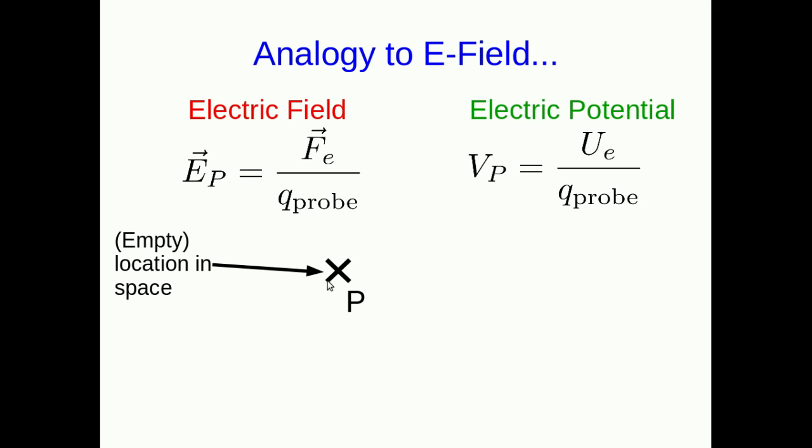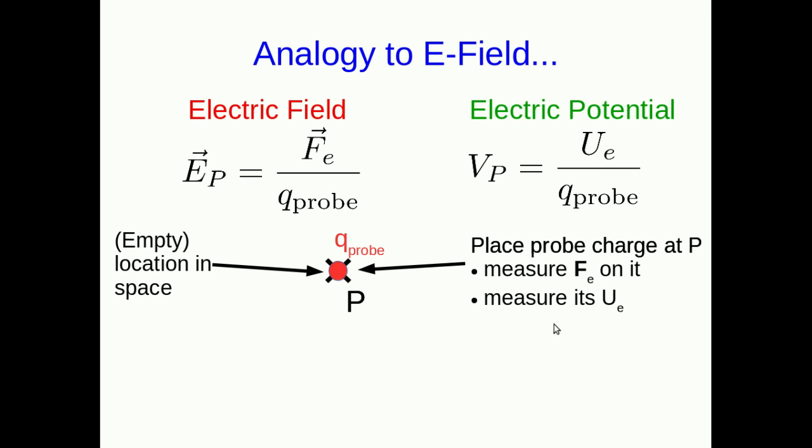If we're thinking about some location in space, there's nothing there. It's an empty location in space, but we want to know how charges behave around here. We could take a probe charge and place it at P. Now we could measure the electrical force on it, and we could measure its electrical potential energy.